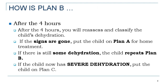Concerning reassessment: after four hours, if the signs are gone or there are no signs of dehydration, you can put the child on Plan A for home treatment. If there is still some dehydration, repeat Plan B at the clinic. If the child now has severe dehydration, put the child on Plan C.